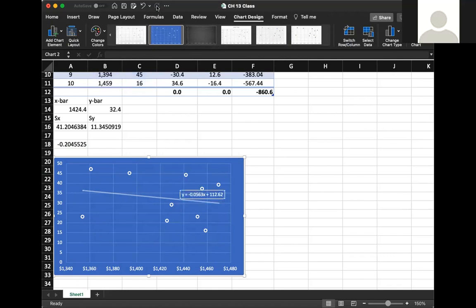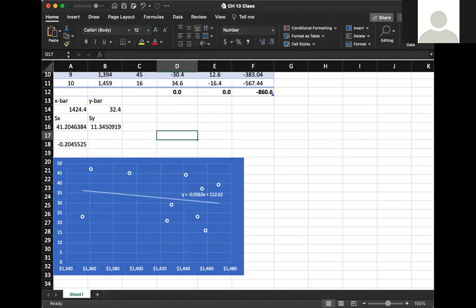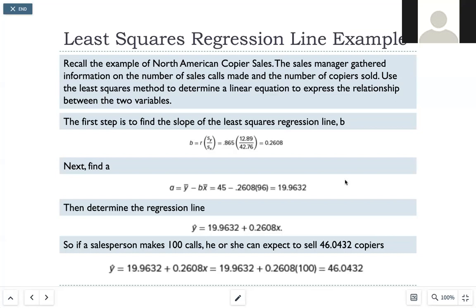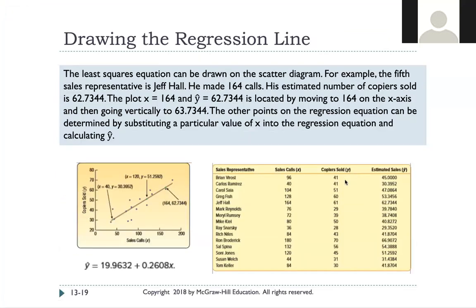And then if we just wanted to double check our work, we can see that this is our regression equation. So it's the same slope and constant that we solved for earlier. And this is them showing you how they found their regression line with their data from earlier.